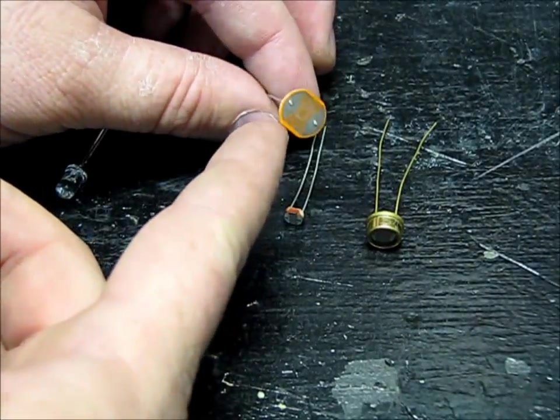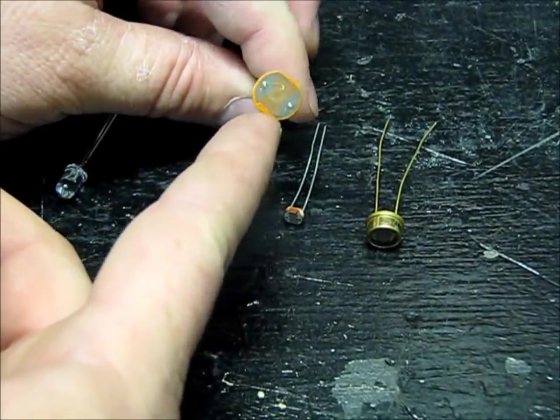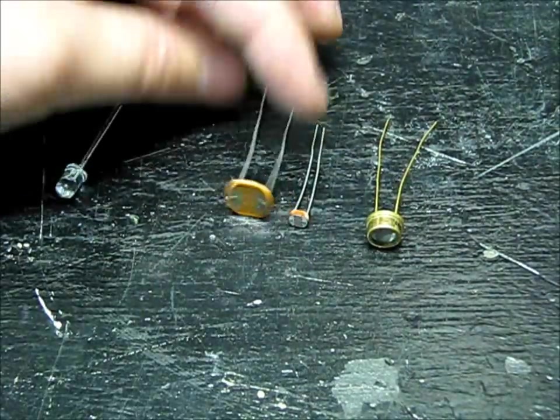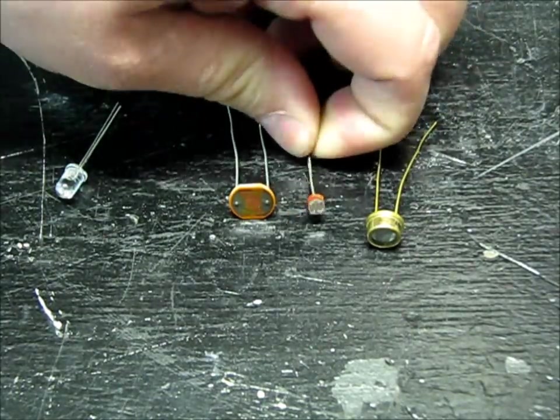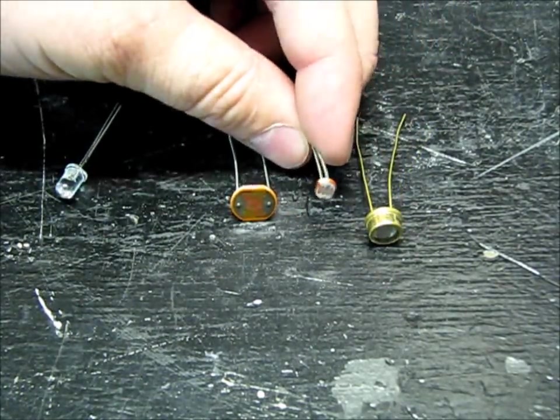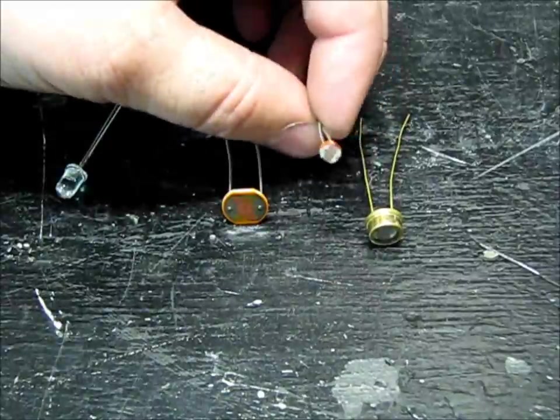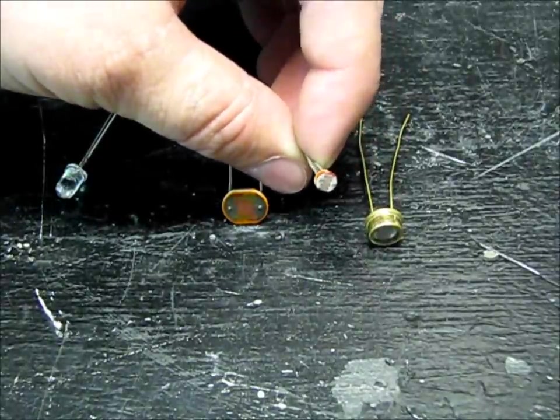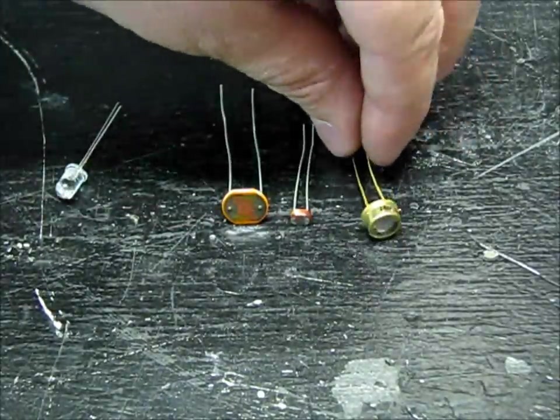Photocells are little sensors used to detect the amount of light. One common application is in a night light that only turns on when it's dark, or a dusk-to-dawn light on your porch that turns on at night.